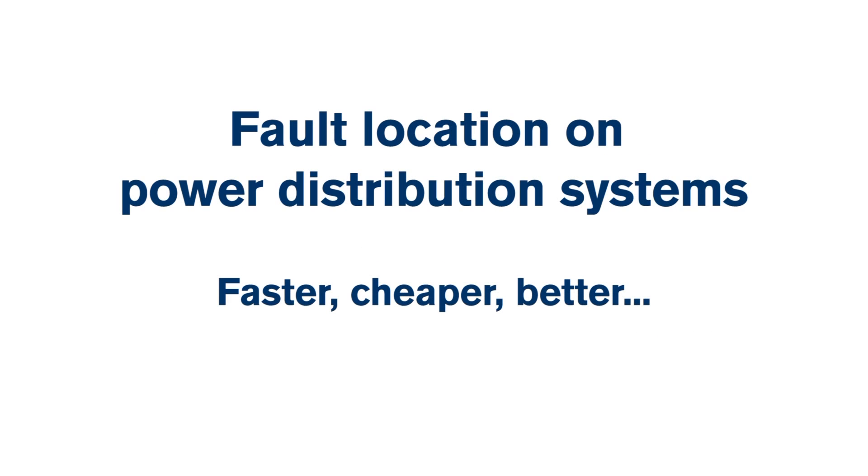The problem we're trying to address is fault location on power distribution systems. In the past this has been done mainly through distance protection, which is a fairly tried and tested and robust method, offering reasonably good accuracy although it's fairly slow. The method we are exploring today uses fault transients in an attempt to reveal some information about where the fault has occurred along a long distribution line.